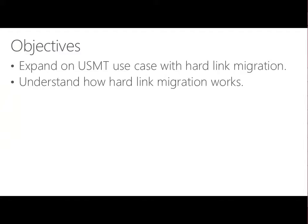We've already covered USMT basics in the previous module, so make sure you jump back and have a look at it. Now we're looking at another version of being able to use USMT. The main challenge with USMT is that we need to store everything. All the user data, which potentially might be a lot, has to be stored somewhere while we're doing the process. Rather than having to put that data somewhere else, we want to look at how we might be able to avoid a double-up of all our data. And that's where the Hardlink migration process in USMT comes in.